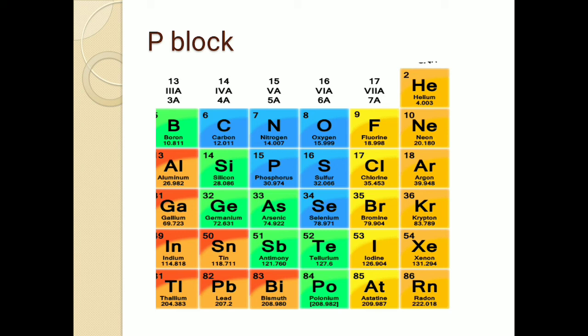Now for the assignment: open your text book and write down all four properties we studied today — their definitions, trends, and reasons. For example, for atomic size: write its definition, what happens down the group and why, then across a period and why. Do this for all four properties — atomic and ionic radii, ionization enthalpy, electronegativity, and electron gain enthalpy — covering the 16th, 17th, and 18th groups. Thank you.